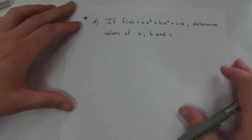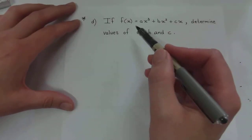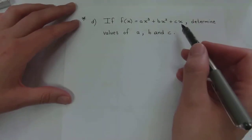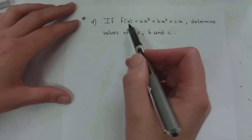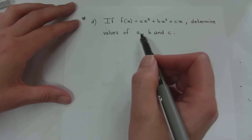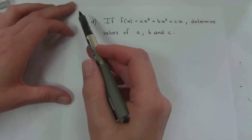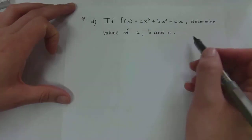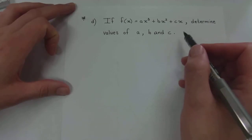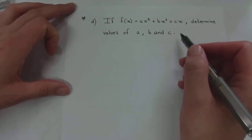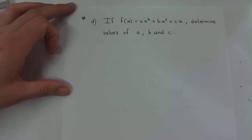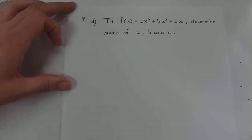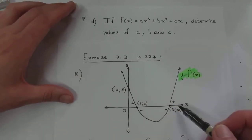The next part says: if f(x) equals ax³ plus bx² plus cx, determine the values of a, b, and c. I should note this question with an asterisk — they very rarely ask this. I've never seen it in a past matric paper, but it's a useful skill to have. Now we have coordinates from the graph: at x equals 0, y equals 5; at x equals 1, y equals 0; and at x equals 5, y equals 0. But remember, y on this graph indicates the derivative, not f(x).